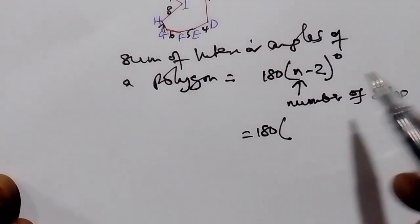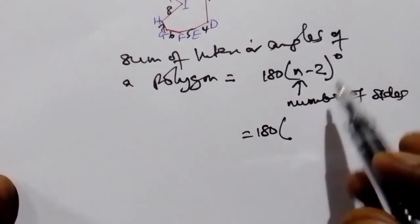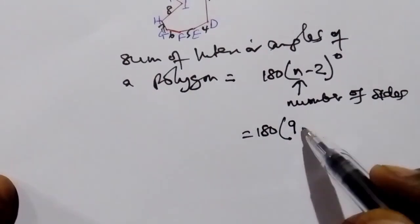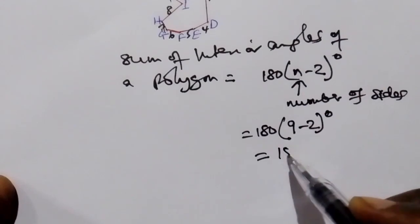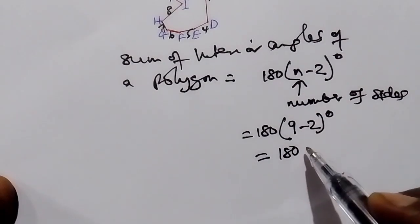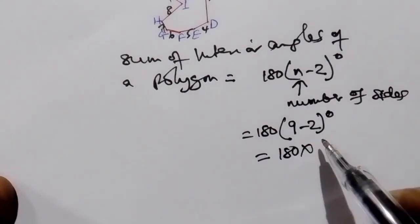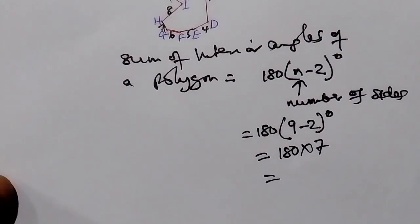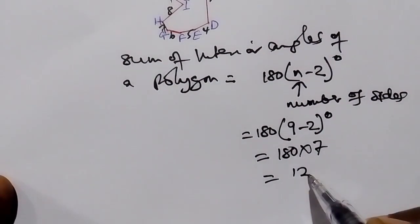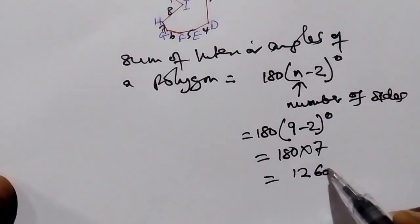So now we substitute n by 9. 180 times 9 minus 2, which is 180 times 7, which equals 1260 degrees.